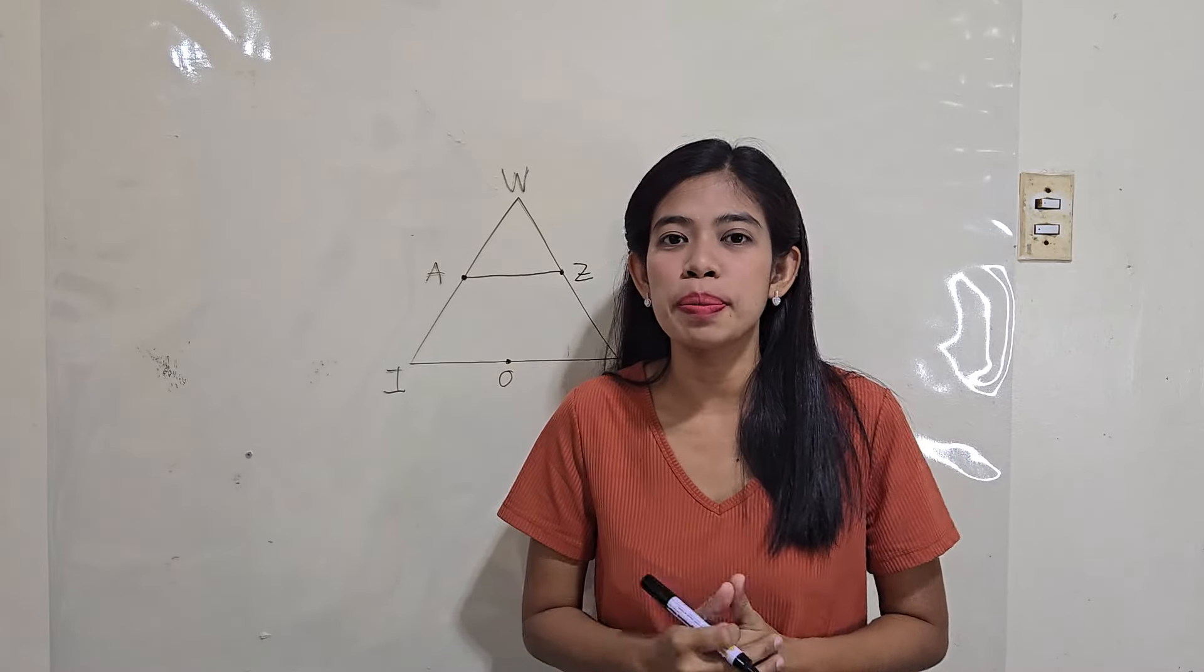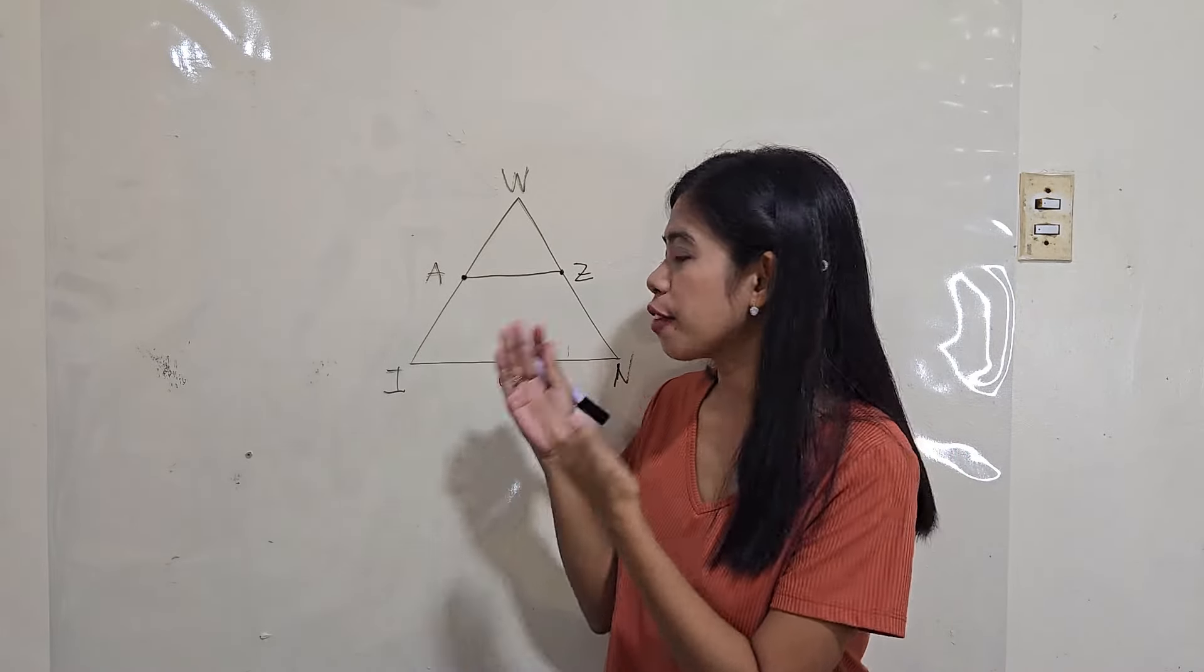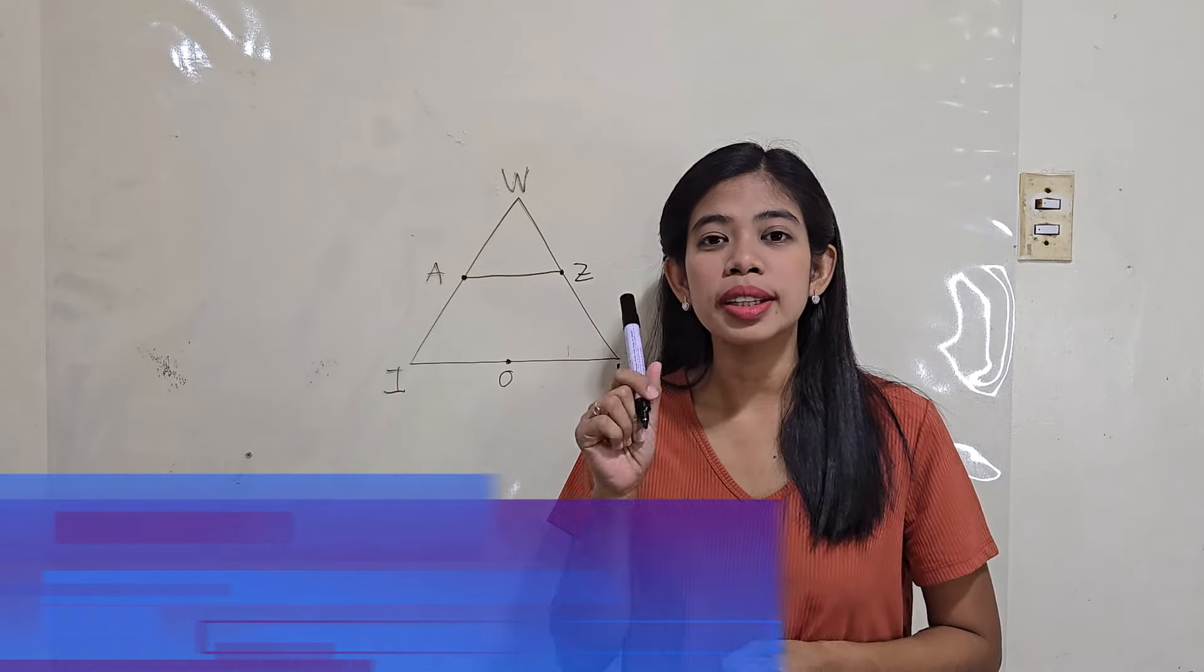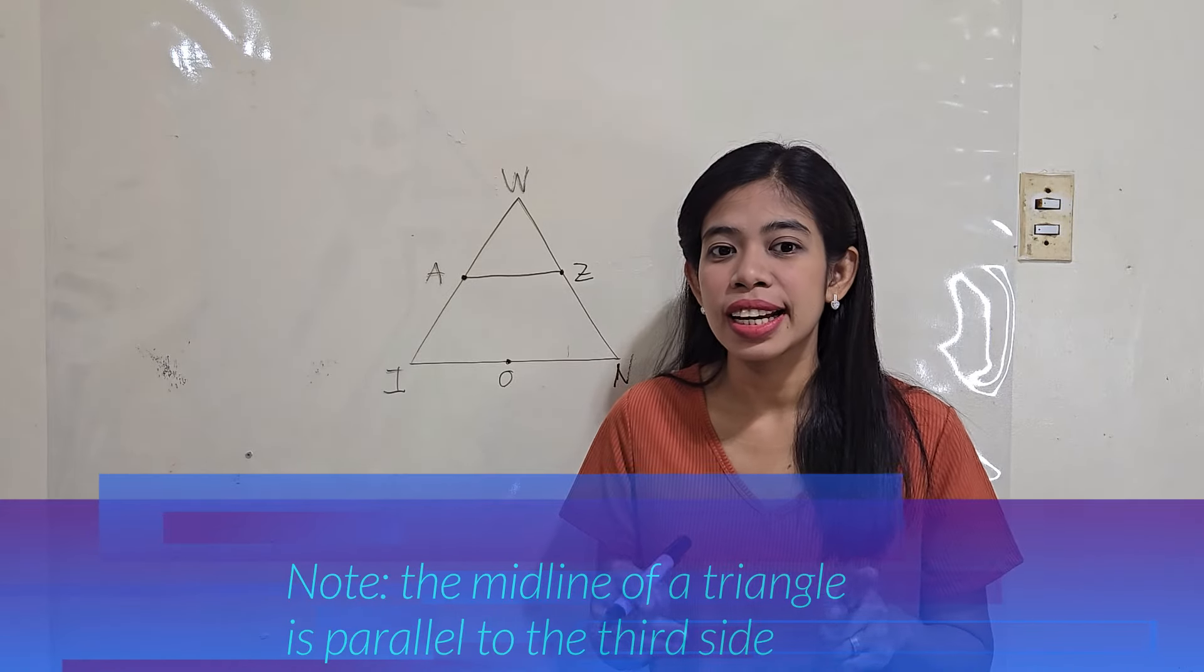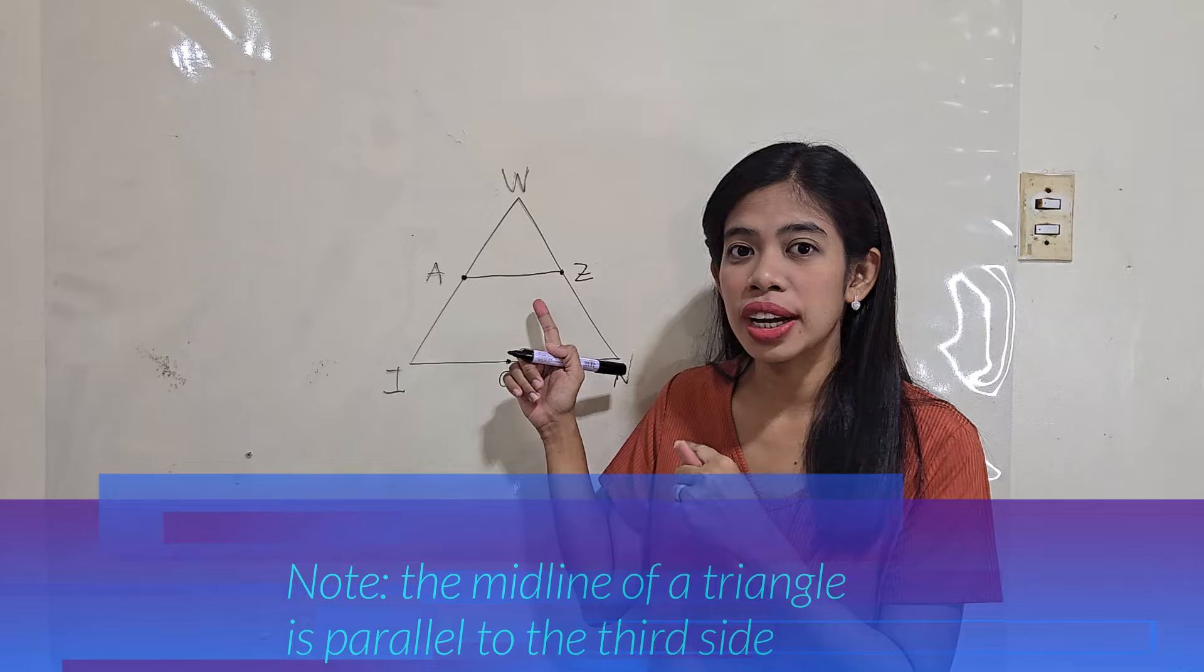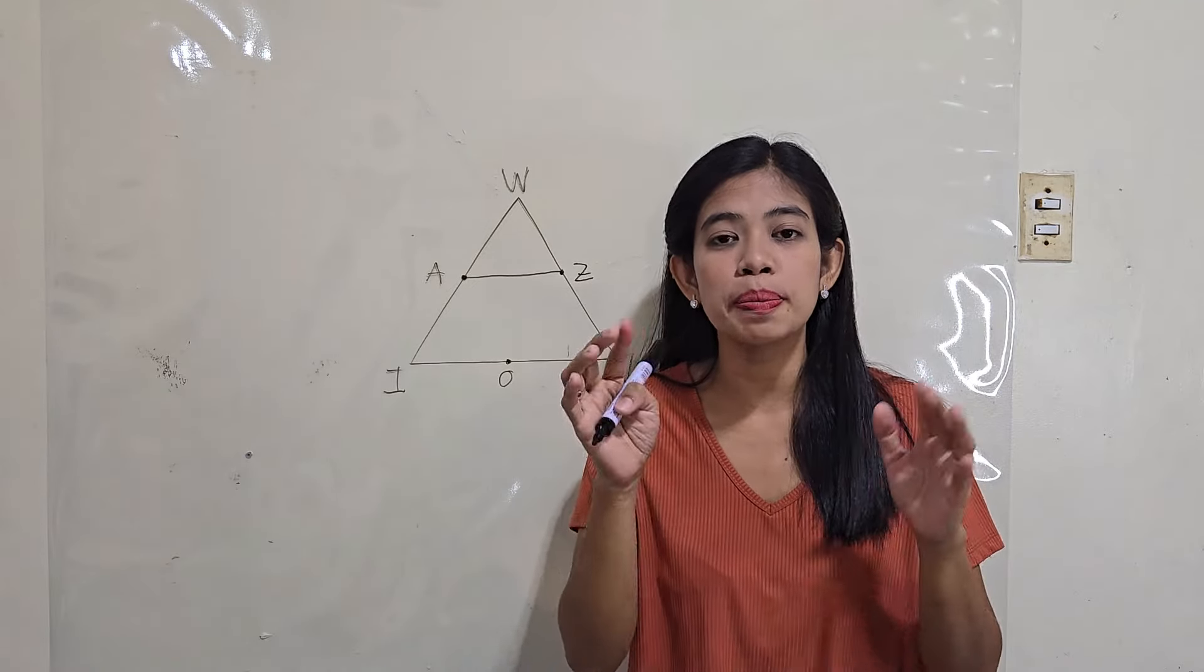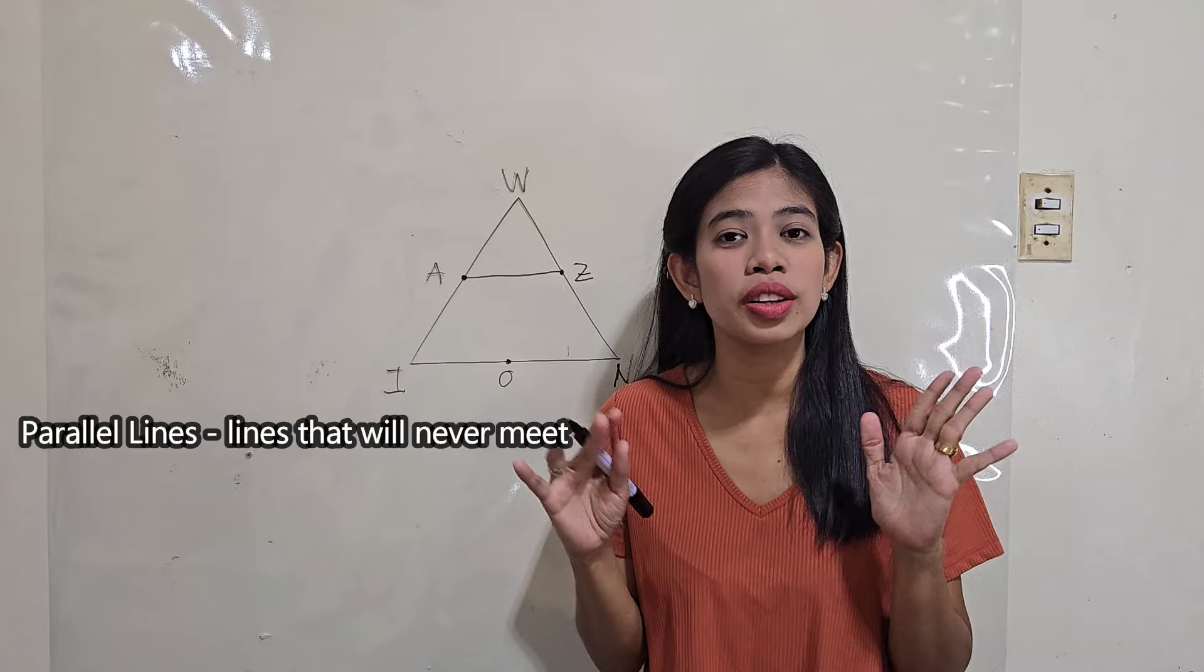Now, how do we apply the midline theorem in finding the measure of a midline or of the third side? Note that the midline theorem states that the midline of a triangle is parallel to the third side. Once again, when we say parallel, these are lines that will never meet.